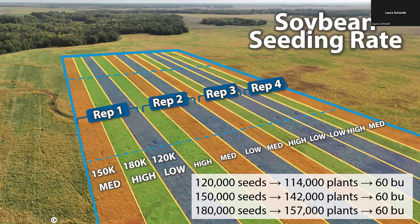I do want to draw attention to the difference between the seeds we're putting in the ground and the plant stands that are establishing, especially at that high seeding rate. We're seeing a difference of about six to eight thousand seeds to plants at low and medium seeding rates, but then a much bigger drop off at this higher seeding rate. This is a trend we see across several trials where we have lower establishment and more mortality throughout the season at these higher seeding rates.